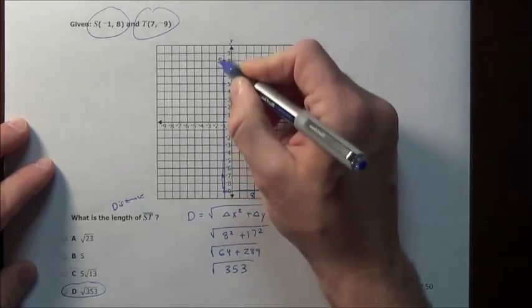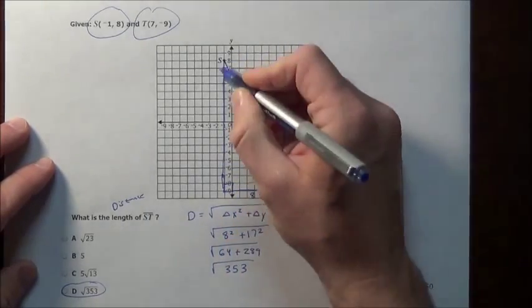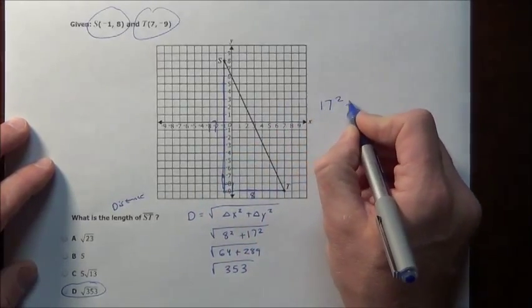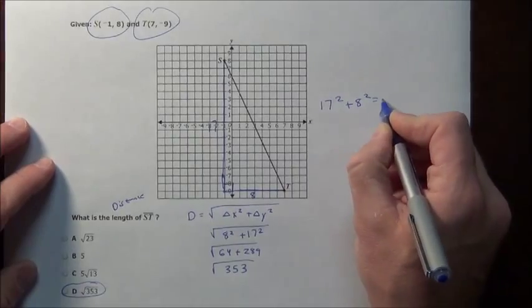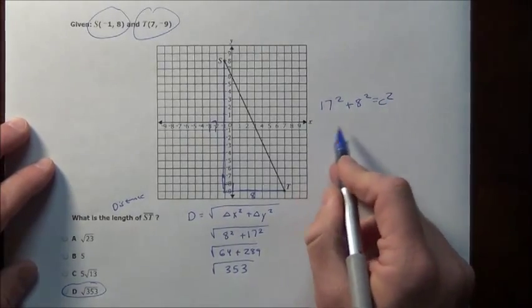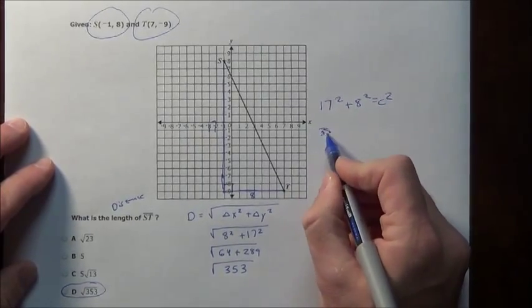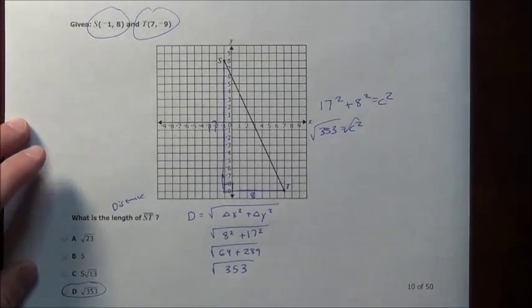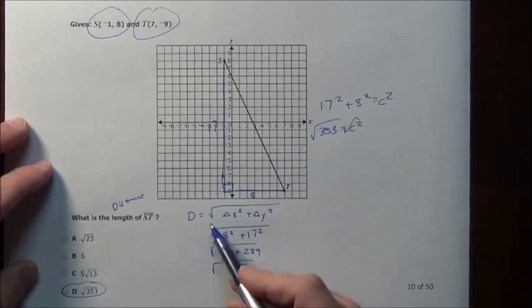The distance of the other leg where the right angle meets is 17. And you're using the Pythagorean theorem, which says 17 squared plus 8 squared equals c squared. And then you're solving all that and you're going to get 353 is equal to c squared. And then you got to take the square root. That's where all that comes from, the distance formula.